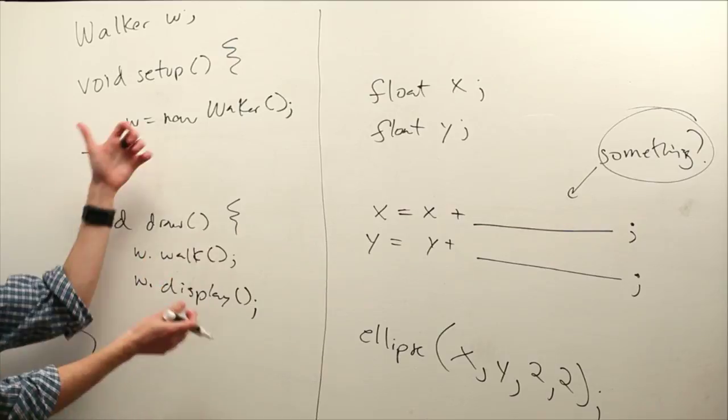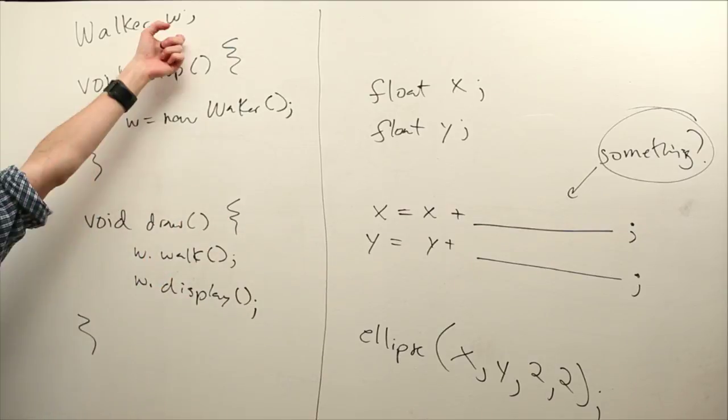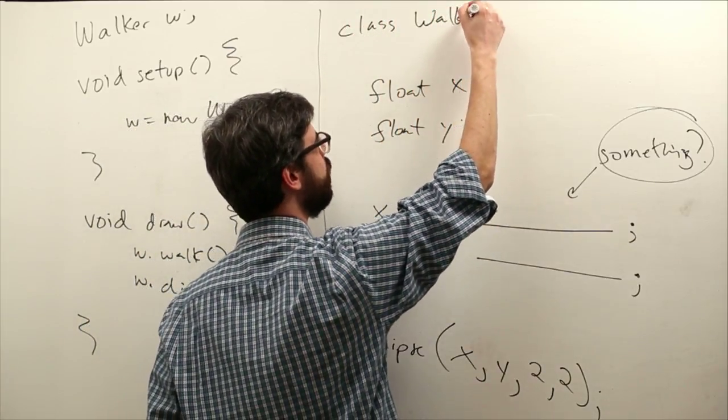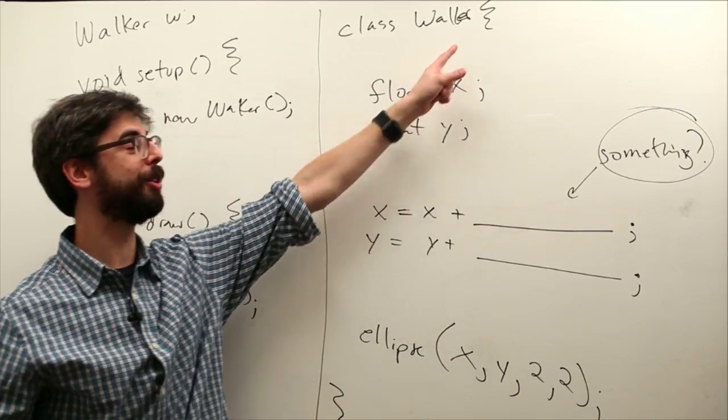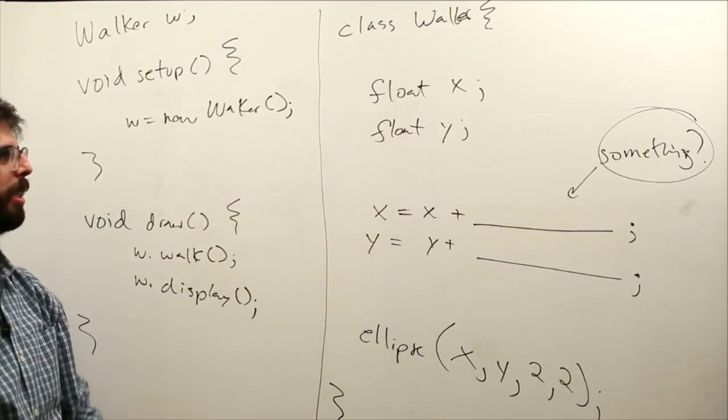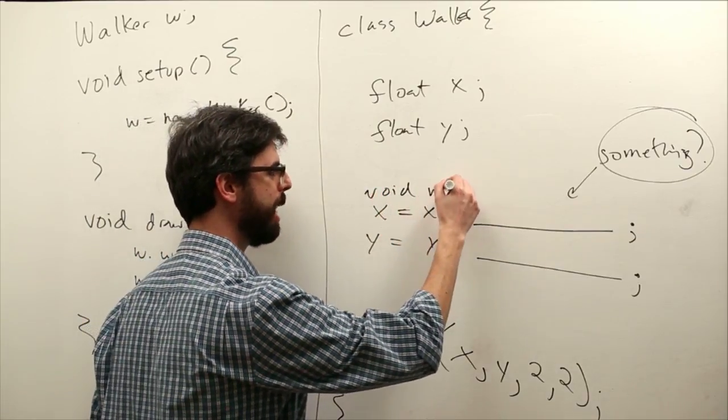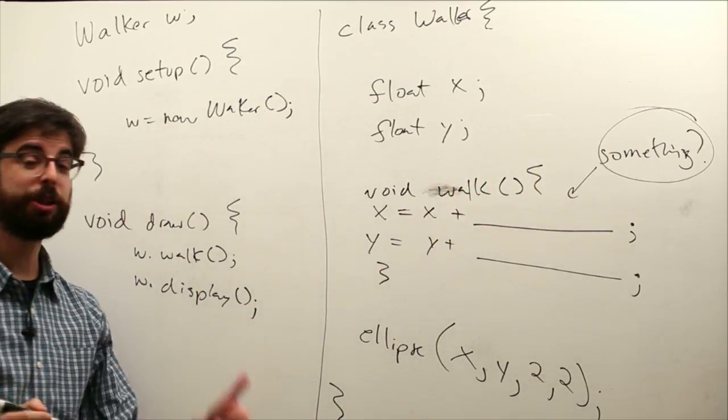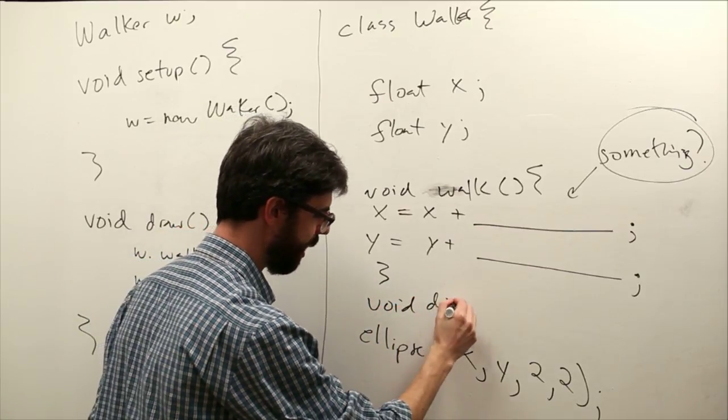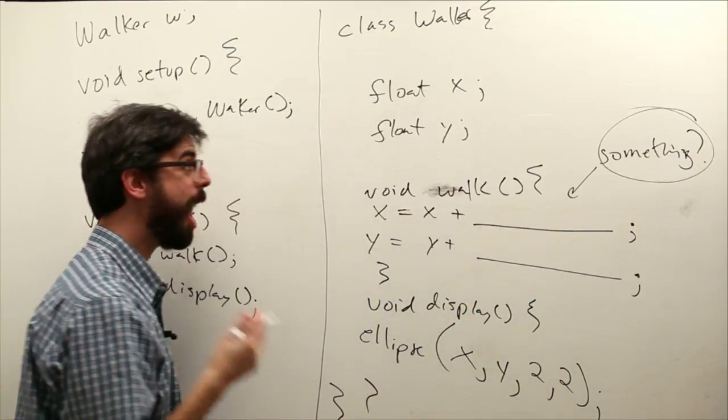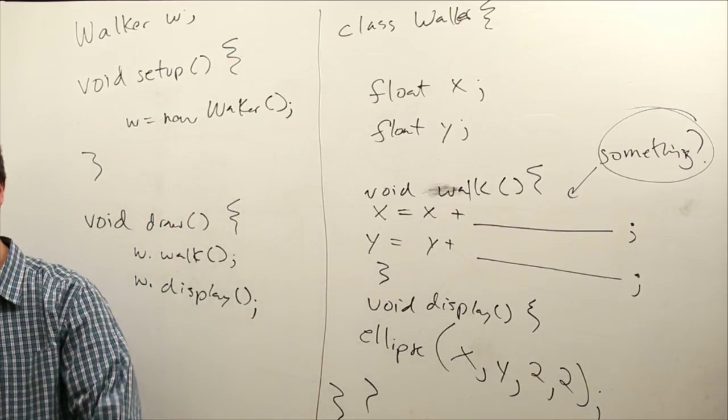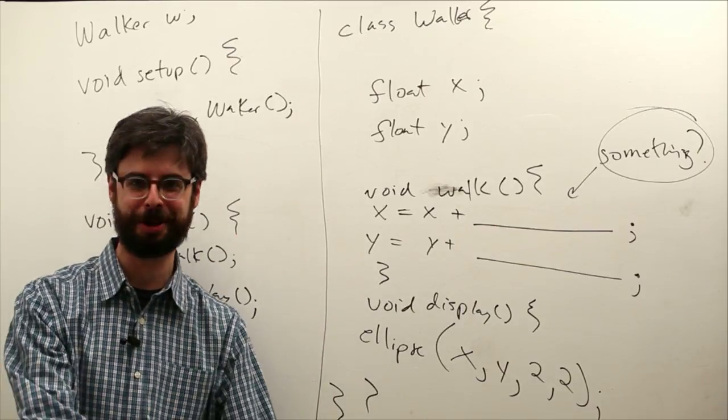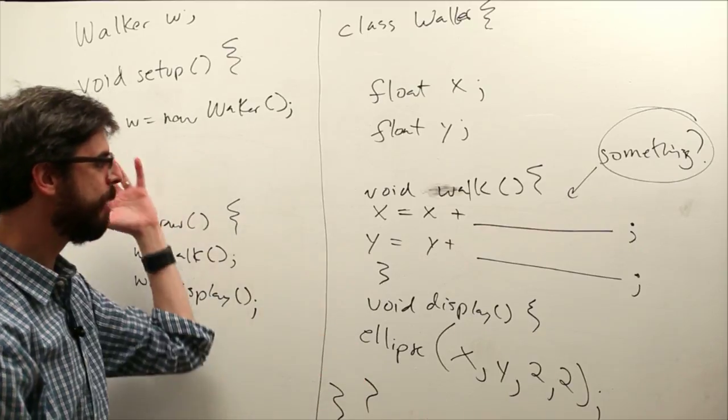Where does all this stuff match up to? Well, if we're going to have an object of type walker, we have to declare a class of type walker. And those curly brackets go all the way around. Each walker has its own x and y. Each walker, perhaps, has a function called walk. Each walker, perhaps, has a function called display. So, we can see here object-oriented programming, what is it? It's data and functionality together. A walker is a thing that has a location. What else is a walker? It's a thing that can move that location. It's a thing that can display itself at that location. That's what we're describing here.